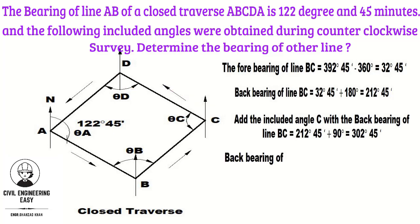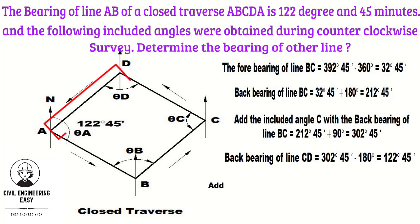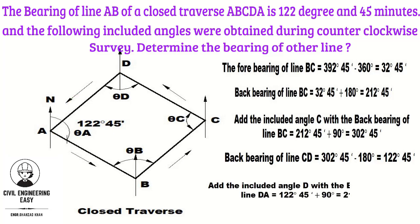The backbearing of line CD is equal to 302.45 min minus 180 degrees, giving an answer of 122.45 min. For the forebearing of DA, add the included angle D — equal to 90 degrees — so the forebearing of DA equals 122.45 min plus 90 degrees, giving an answer of 212.45 min.